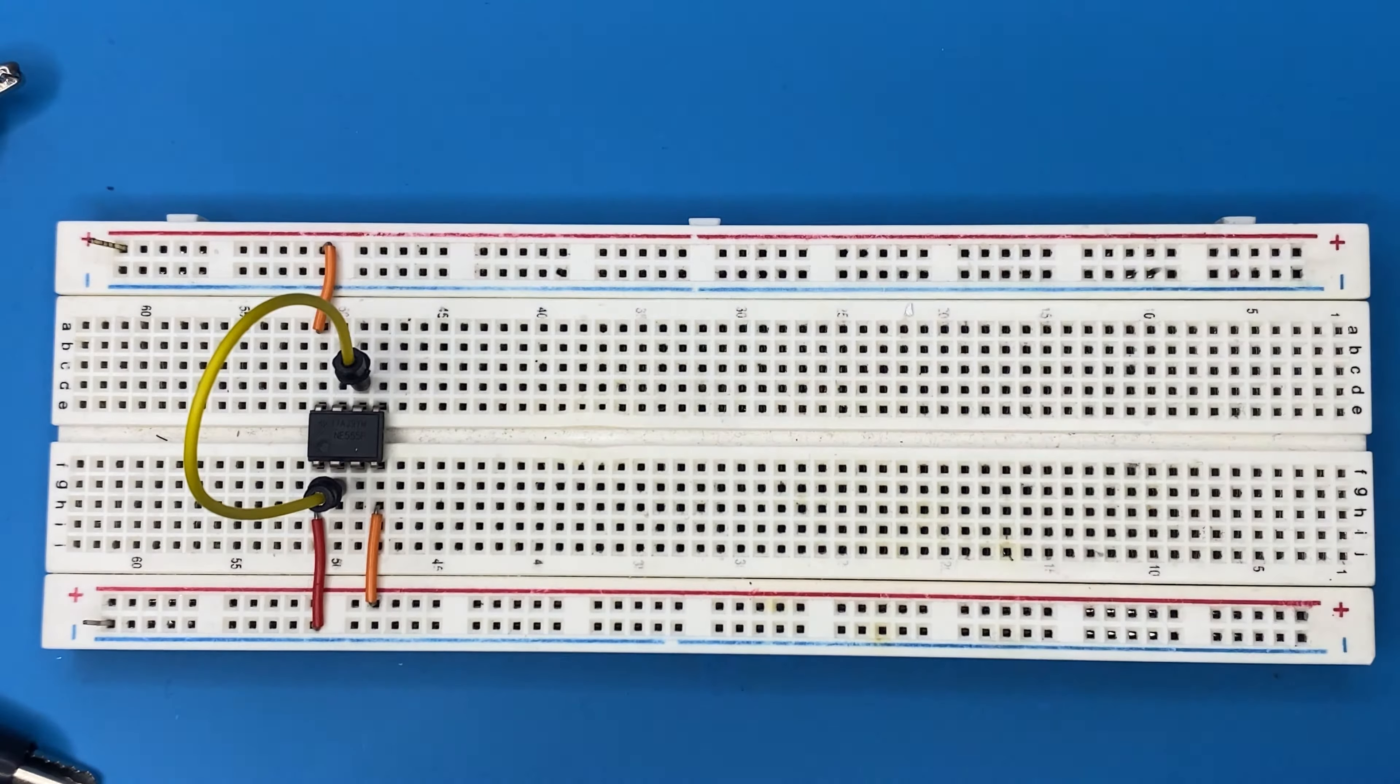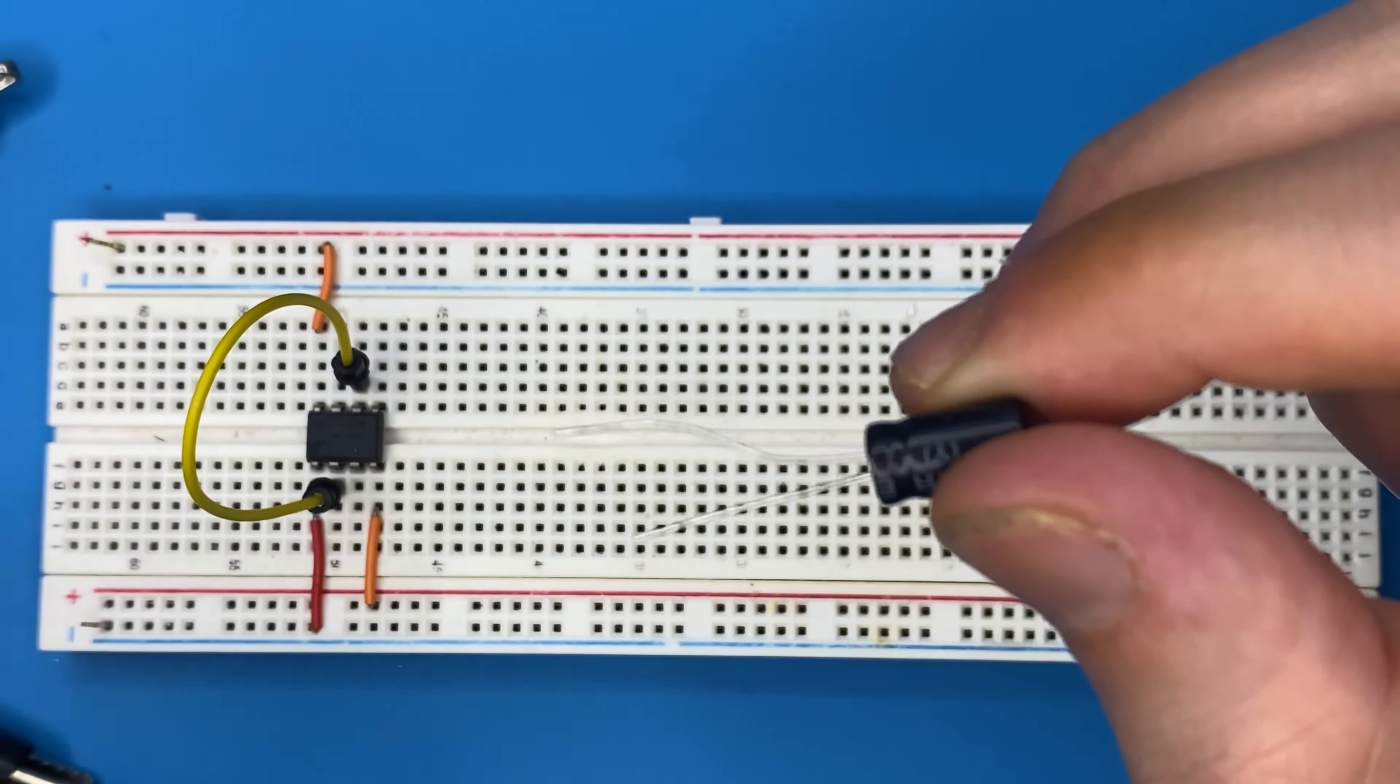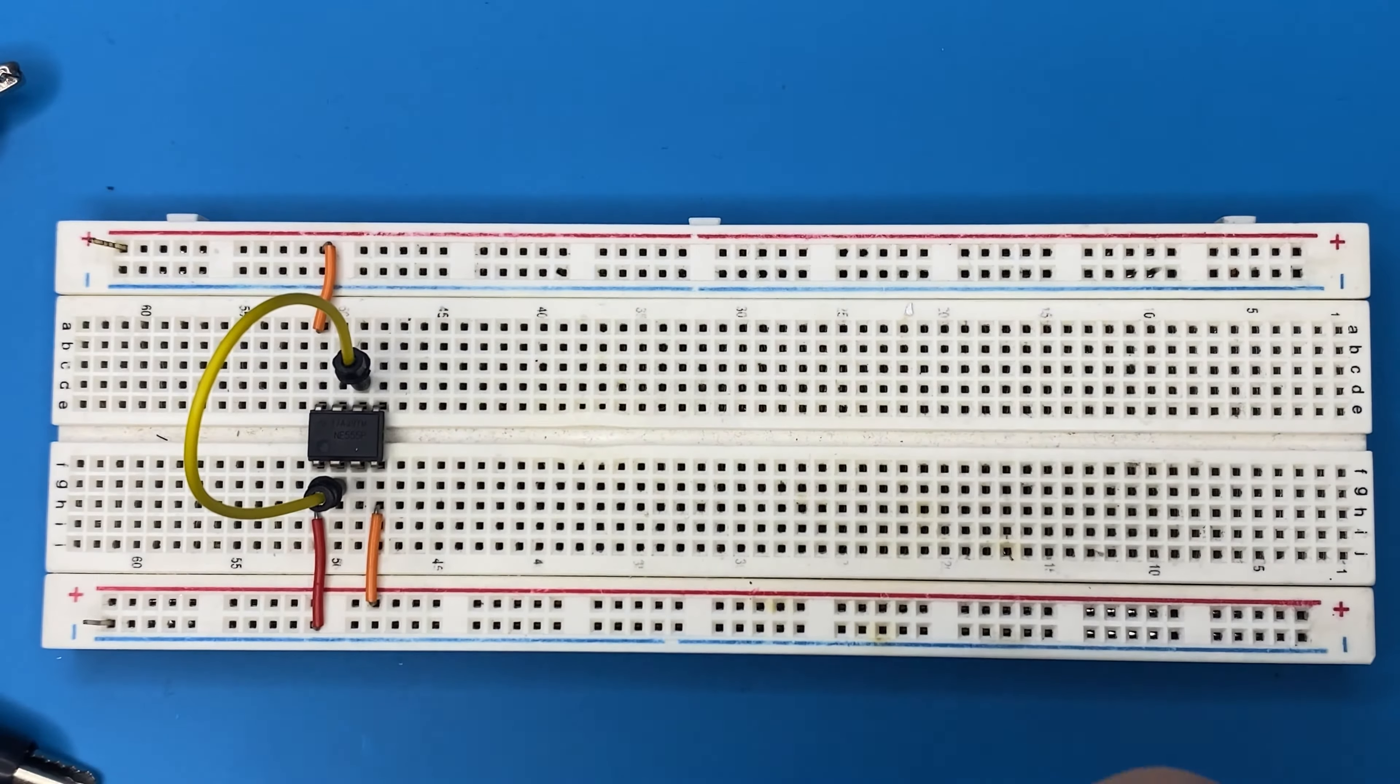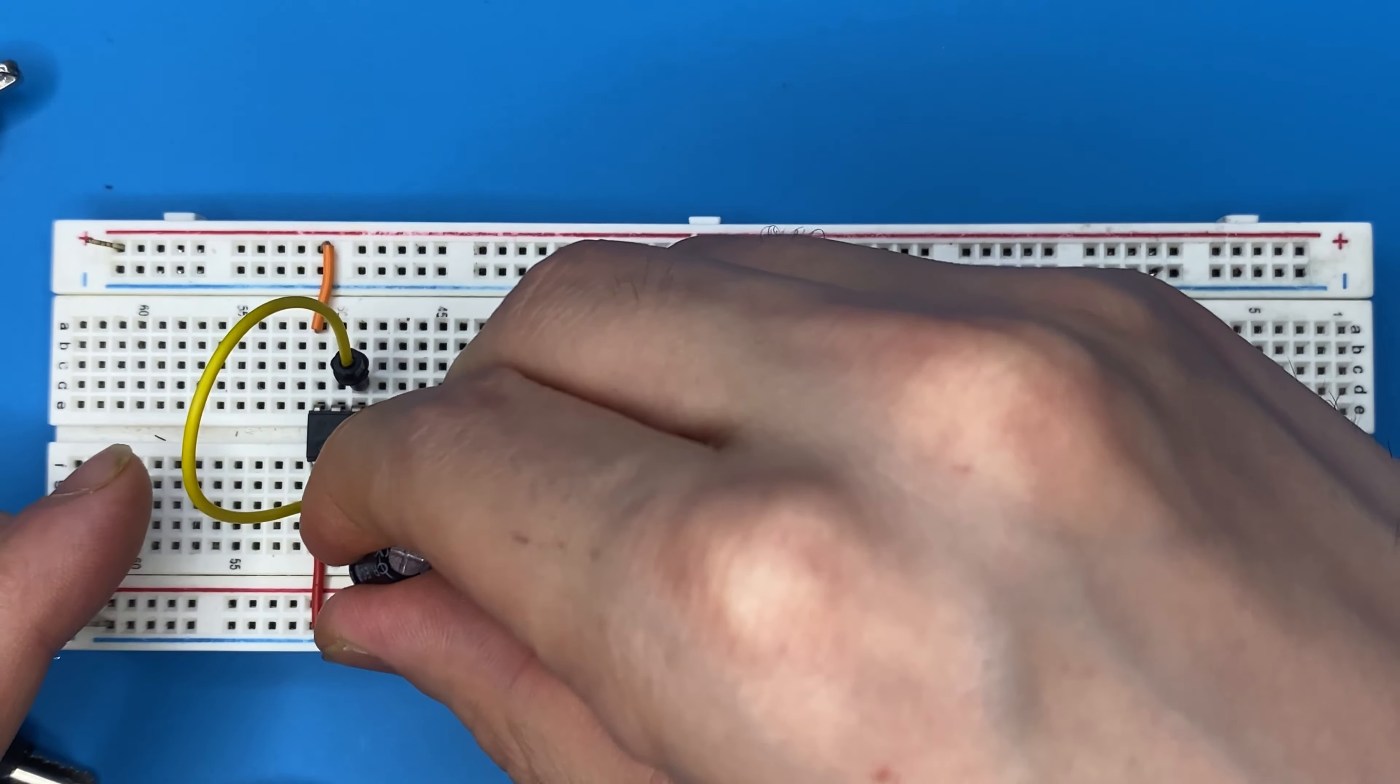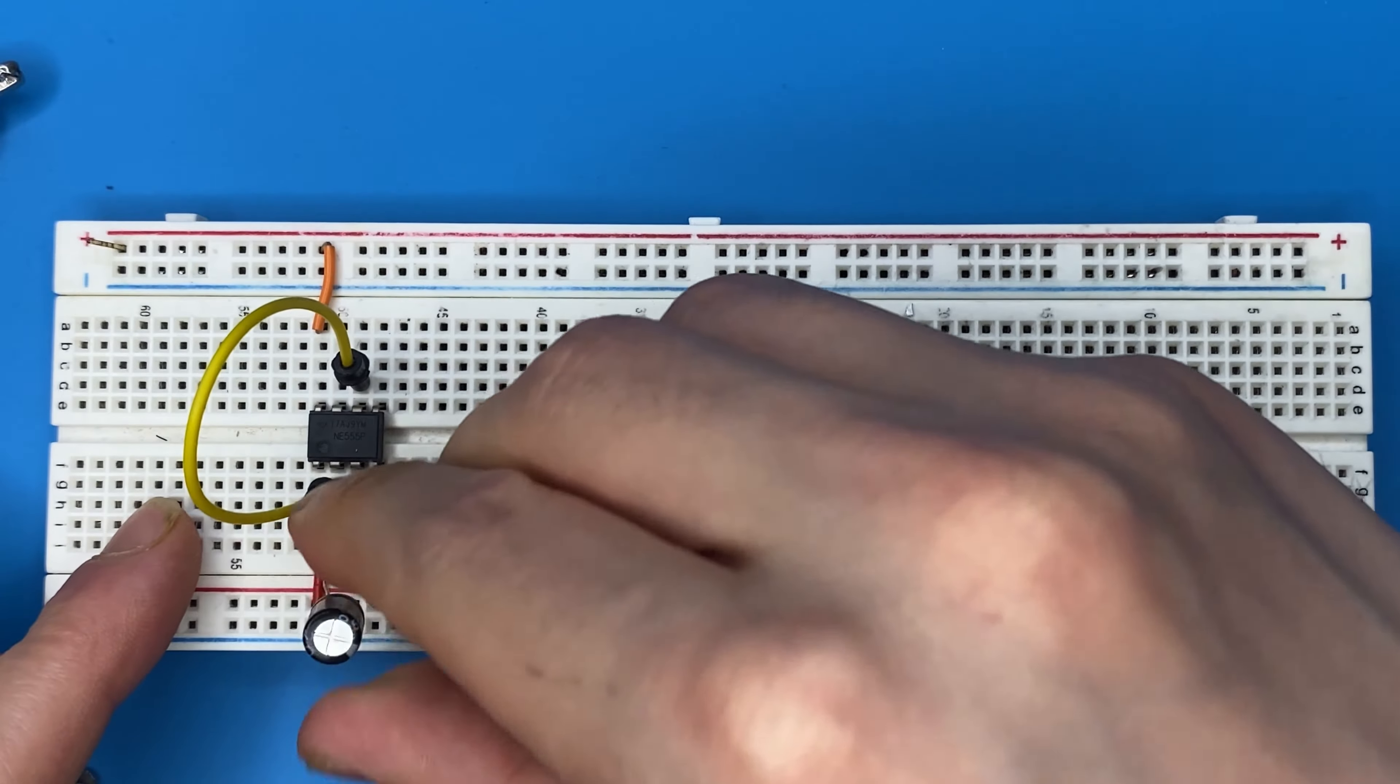Let's connect the 100 microfarad capacitor with anode connecting to the second pin of the IC and cathode to the ground.